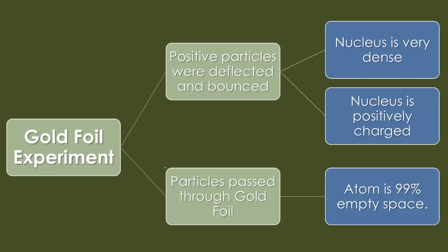So the gold foil experiment, things that you should take from it: positive particles were deflected and bounced away. Particles passed completely through the gold foil, and from there, you'll see that this is how Rutherford and his colleagues created their theory of the atom. Because they passed through the foil, we say that the atom is mostly empty space. And because particles were deflected, we say the nucleus is dense, or heavy in the center, and has a very positively charged nucleus.